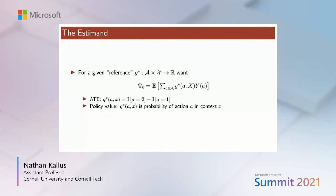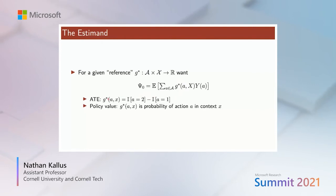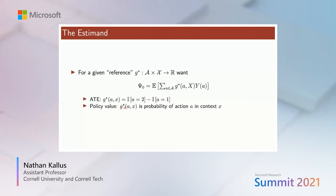Let me define the estimand on which we run inference. Rather than just the marginal mean reward of an arm, we look at a general estimand psi-nought given by any weighted average of potential outcomes, with weights given by a reference function G-star of action and context. For example, for the average treatment effect we set G-star to +1 for one action and -1 for another. Or we can evaluate a counterfactual policy G-star, where G-star is the probability of taking an action in a given context.